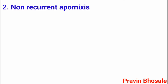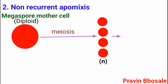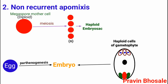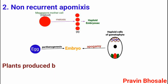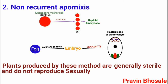In non-recurrent apomixis, the megaspore mother cell, which is diploid, undergoes the usual meiotic division and a haploid embryo sac is formed. Here the embryo arises either from the egg by parthenogenesis, or from some other haploid cells of the gametophyte through apogamy. Plants produced by this method are generally sterile and do not reproduce sexually. Example: Nicotiana.